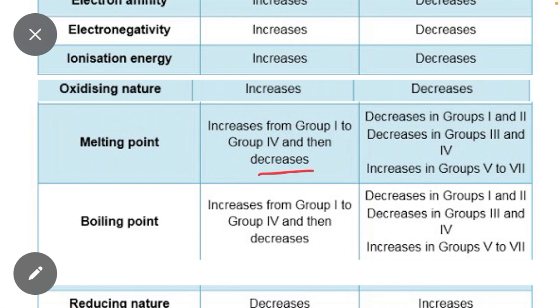Similarly in groups, melting point decreases in groups one and two, decreases in groups three and four, but increases in group five to seven, top to bottom. It increases in group five to seven.